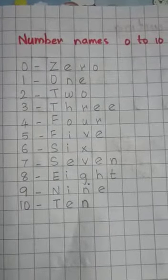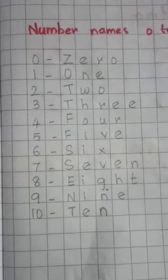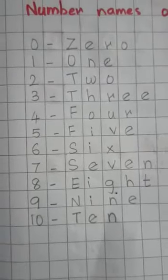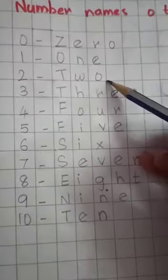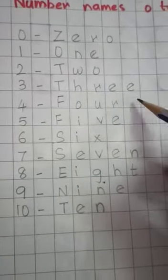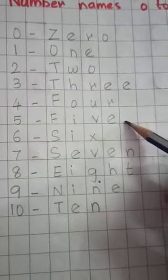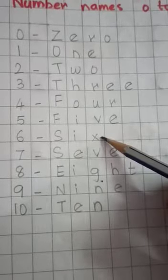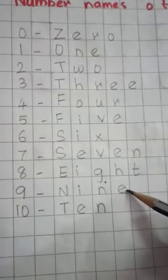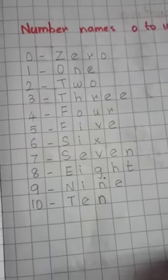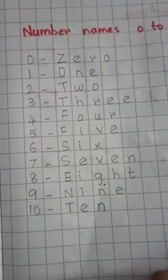Next: number names 0 to 10. You have to write and learn number names from 0 to 10. Zero — Z-E-R-O — 0. One — O-N-E — 1. Two — T-W-O — 2. Three — T-H-R-E-E — 3. Four — F-O-U-R — 4. Five — F-I-V-E — 5. Six — S-I-X — 6. Seven — S-E-V-E-N — 7. Eight — E-I-G-H-T — 8. Nine — N-I-N-E — 9. Ten — T-E-N — 10. Write and learn number names with perfect handwriting and maintain your notebook perfectly.